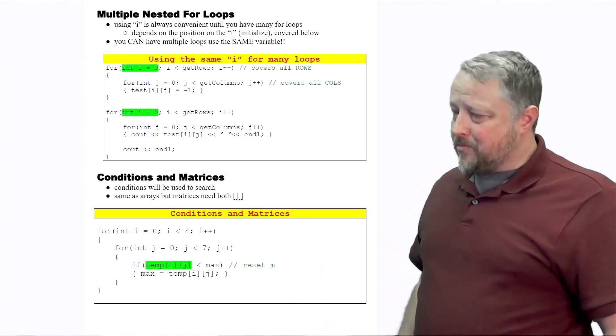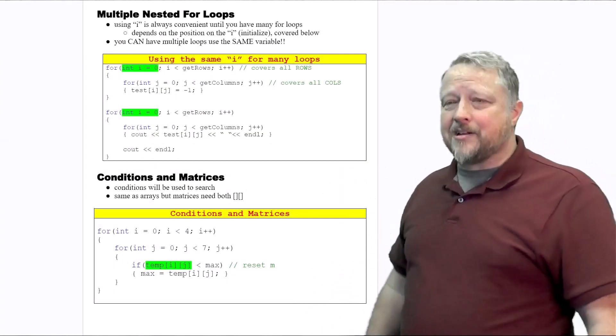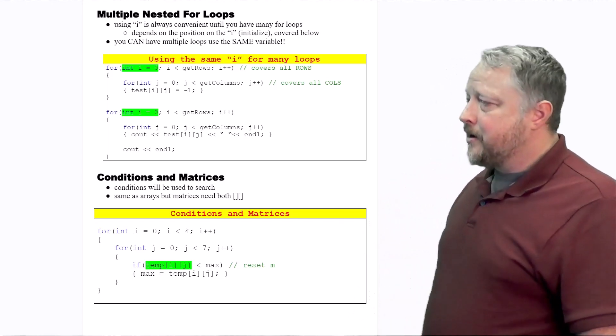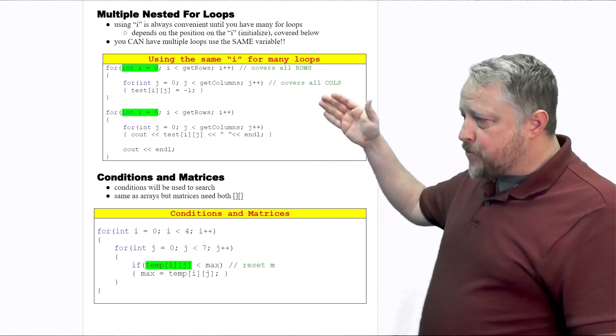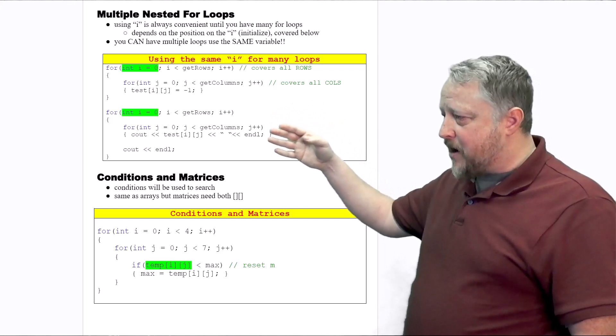So here's why I'm going to knock out two items because frankly they're exactly the same as what we had in arrays. I can use multiple nested for loops if I wanted to.